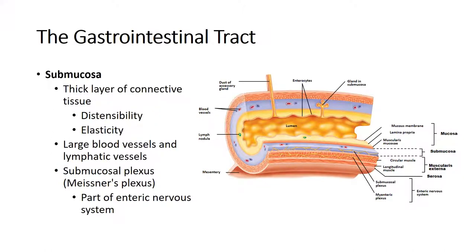The second layer out is the submucosa, a thicker layer of connective tissue — much thicker than the lamina propria but comparable in composition. It has larger blood vessels, larger lymphatic vessels, and the Meissner's plexus, also called the submucosal plexus, which is part of the autonomic or enteric nervous system. The function of the submucosa is elasticity — to help distend the GI tract to allow large volumes of food and liquid, stretching and then bouncing back to its original shape.